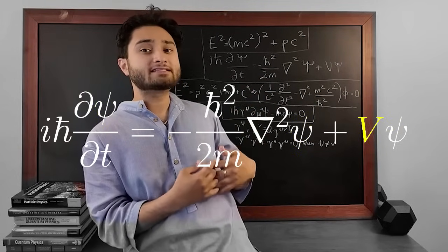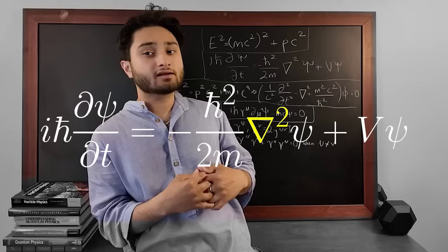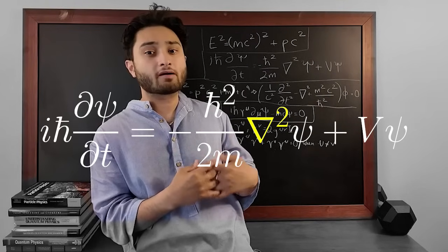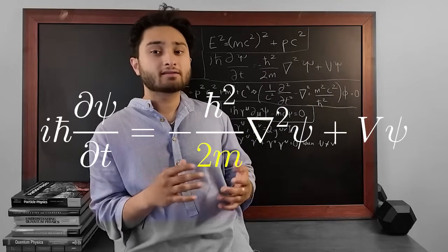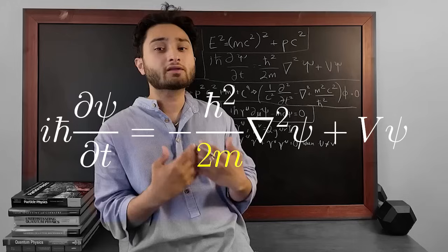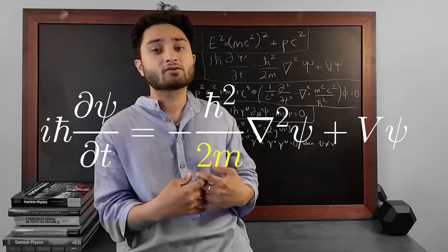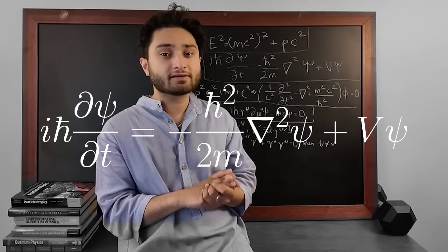here psi is the wave function, V is the potential energy, and the Nabla squared or Laplacian operator represents spatial variation. The kinetic energy is p squared over 2m, which only works at low speeds, and so this equation doesn't account for special relativity or spin.